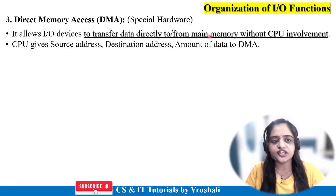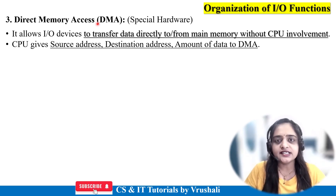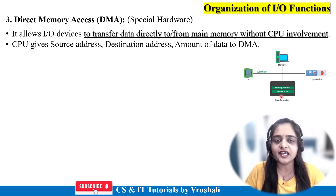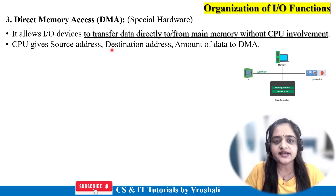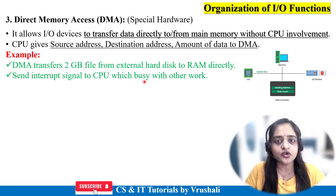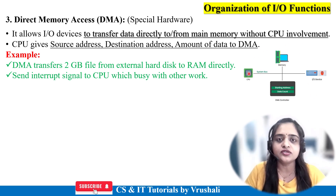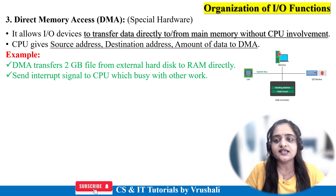The next organizational IO function is called direct memory access (DMA). Here the system uses a special hardware called a DMA controller between the communication. Input-output devices send data directly to main memory via the DMA controller — there is no direct involvement of the CPU. The CPU just sends the source address, destination address and amount of data to the DMA. For example, if a user wants to copy a 2 GB file from an external hard disk to RAM, this operation is performed through the DMA controller. After completing the operation, the DMA sends an interrupt signal to the CPU to indicate completion.